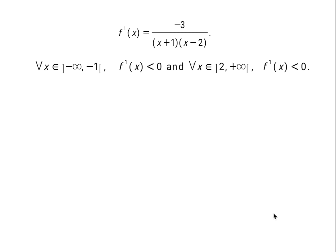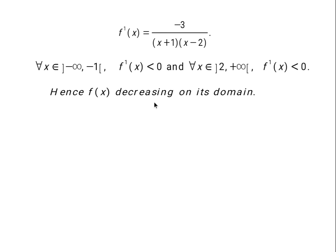We also check the sign of f prime of x in each region of the domain. In the region between negative infinity and negative 1, substituting any value into f prime of x always gives a negative result, so f prime of x is strictly less than zero there. Likewise, in the region between 2 and positive infinity, any value substituted into f prime of x is also always negative, so f prime of x is strictly less than zero there as well. Since f prime of x is strictly negative in both regions of its domain, we conclude that f of x is always decreasing on its entire domain.